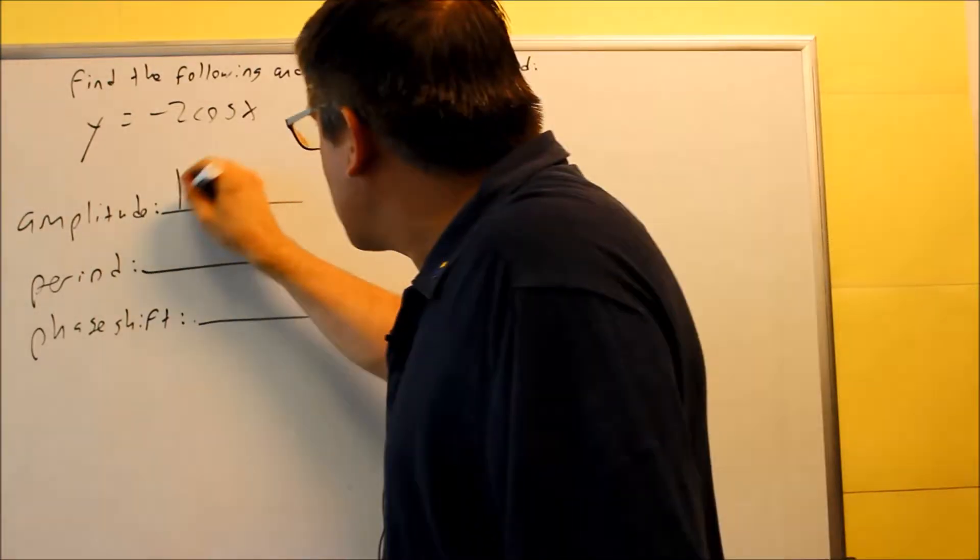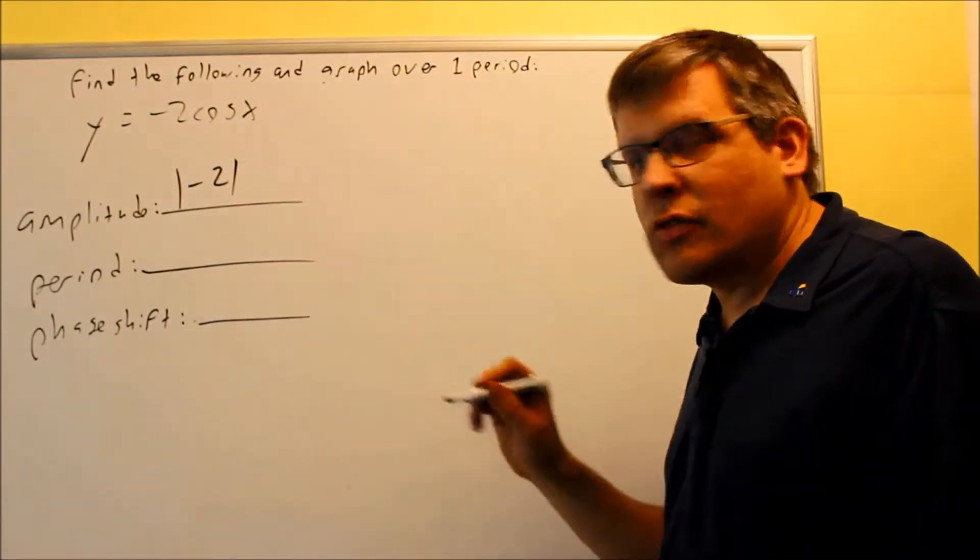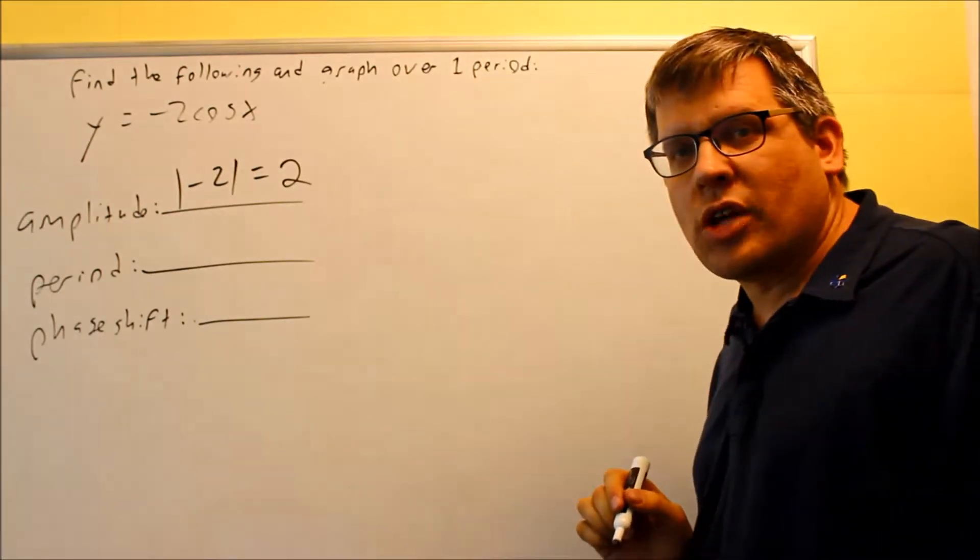So amplitude is the absolute value of the number in front of the cosine. In this case, absolute value of negative 2 is positive 2, so the answer is that one.